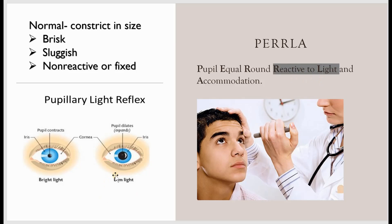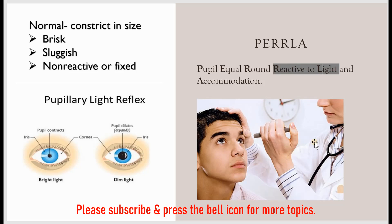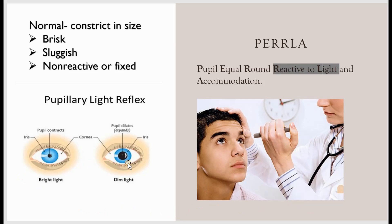Next is reactive to light. For that you need a flashlight. Dim the light — when you dim the light the pupils dilate. Bring the flashlight from the outer corner towards the pupil and you will see the pupil constrict.